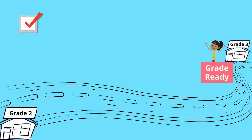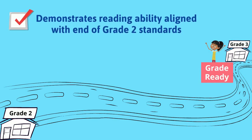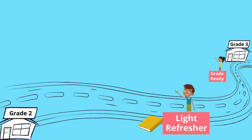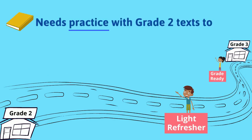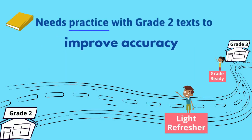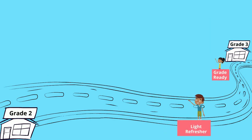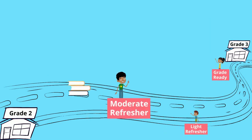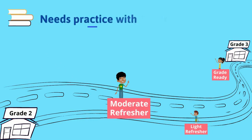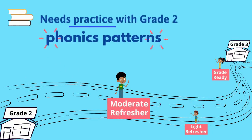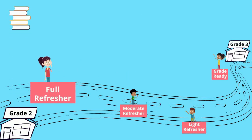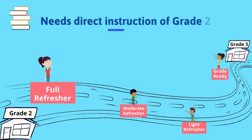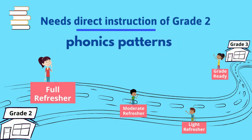A grade 3 learner who is grade ready demonstrates reading abilities aligned with end of grade 2 standards. A learner who needs a light refresher will benefit from practicing reading grade 2 texts to improve accuracy. A learner who needs a moderate refresher will benefit from practice with grade 2 phonics patterns. A learner who needs a full refresher will benefit from direct instruction of grade 2 phonics patterns.